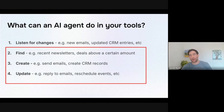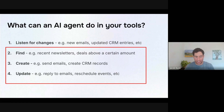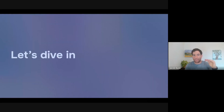And the fourth is updating stuff that already exists — replying to an email, updating a record in your CRM, updating a row in your spreadsheet, et cetera. Now we're going to switch to the practical part of the session, and I'm going to show you examples of each of these three types of capability: finding, creating, and updating. Let's dive in.